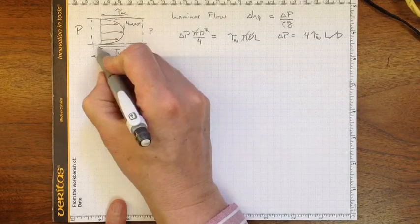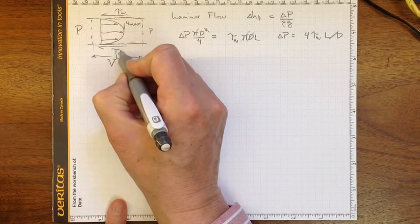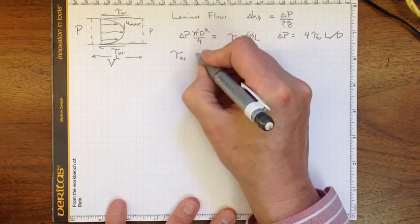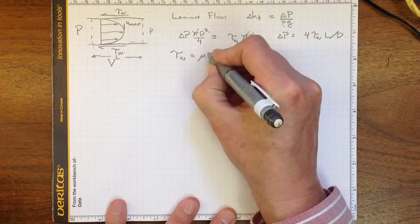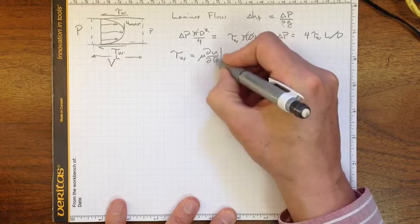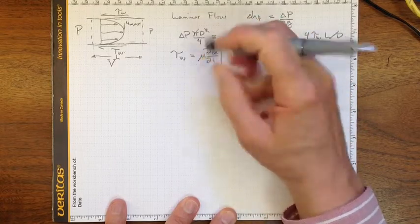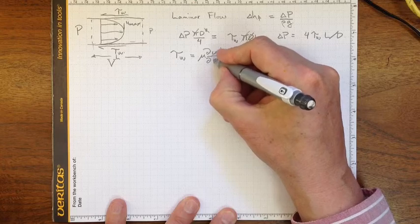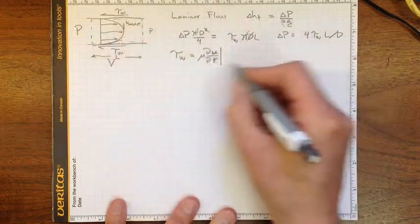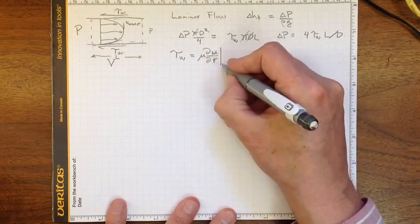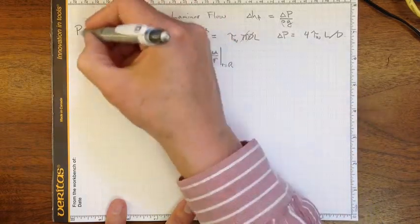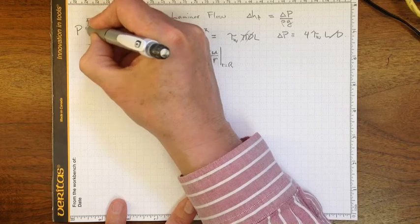That's if tau wall is in the direction that we actually drew it. Now we know that tau wall will be equal to mu du/dr at, that should be a lower case r, du/dr, so the velocity gradient here times the viscosity, and we're interested in the place where r is equal to capital R, the outside wall. So that's the distance r.